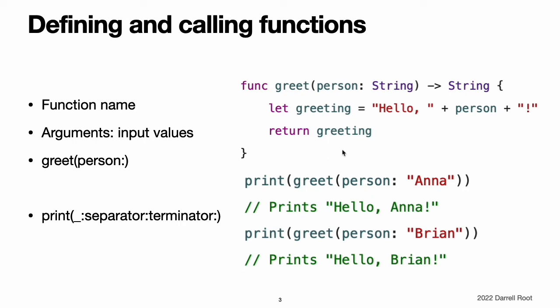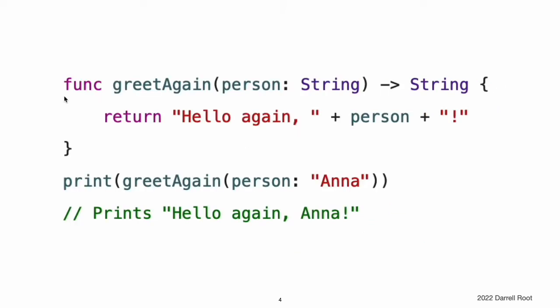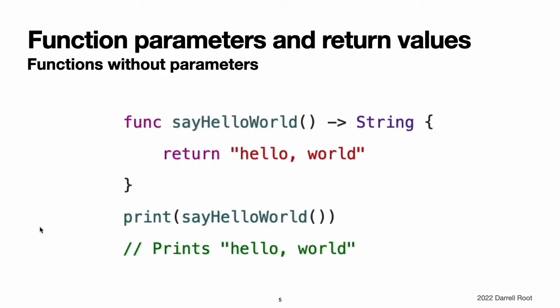You can call the greetPerson function multiple times with different input values. This example shows what happens if it's called with an input value of Anna and an input value of Brian. The function returns a tailored greeting in each case. To make the body of this function shorter, you can combine the message creation and the return statement into one line. Function parameters and return values are extremely flexible in Swift. You can define anything from a simple utility function with a single unnamed parameter to a complex function with expressive parameter names and different parameter options.